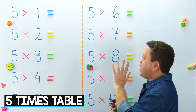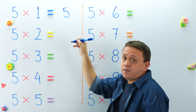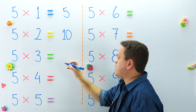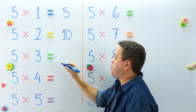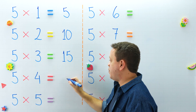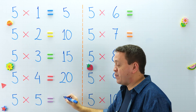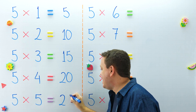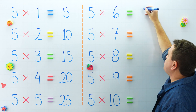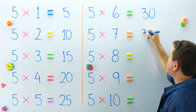Our next table is the 5 times table. 5 times 1 equals 5, and 5 times 2 equals 10. What about 5 times 3? 5 times 3 equals 15, and 5 times 4 equals 20. 5 times 5 is equal to 25. I love this multiplication table. Over here, 5 times 6 equals 30, and 5 times 7 equals 35.